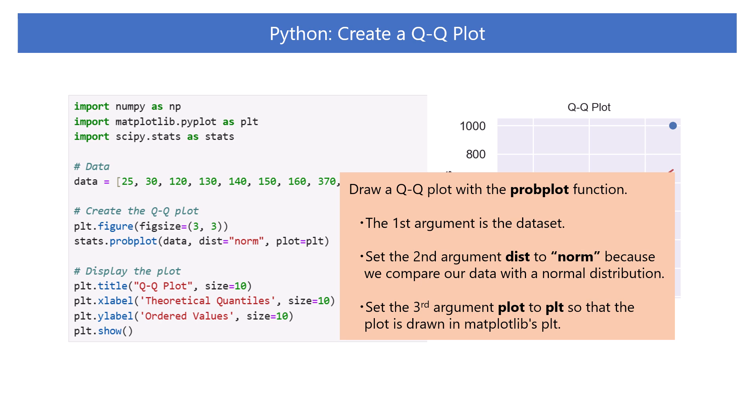The third argument, plot, is set to plt, so that the plot is drawn in Matplotlib's plt. Then, set title and axis labels to display the Q-Q plot.